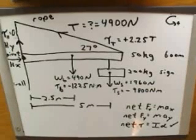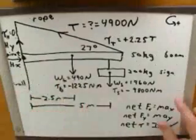How do you find forces on an object? Well, first of all, everything has a weight. And here, in fact, we had two weights, the weight of the boom and the weight of the sign.